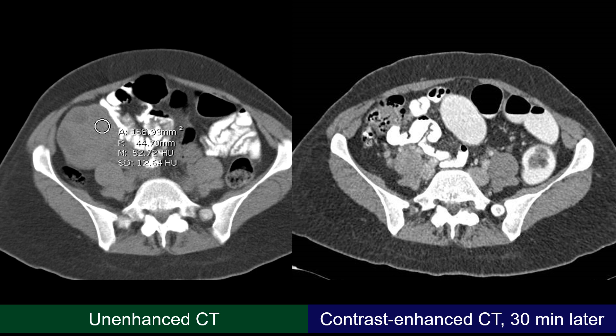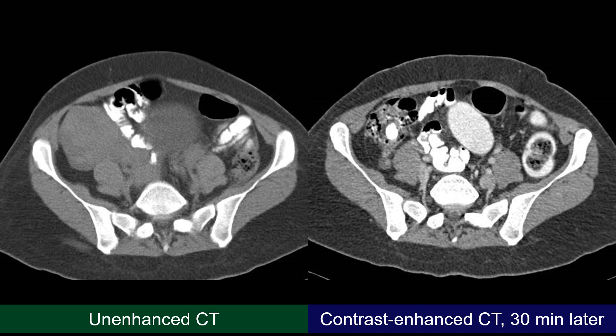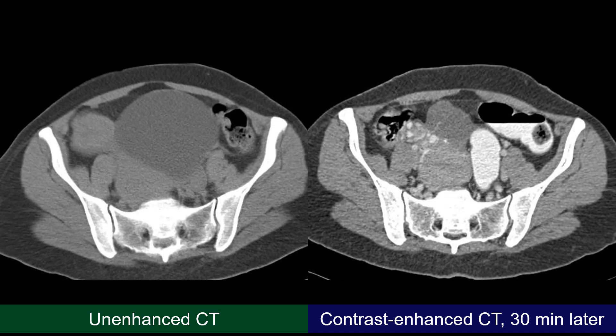But let us first determine the organ of origin of this lesion, because from the start until now we do not see the lesion at the same location on the contrast-enhanced CT. This is the uterus and this is the right horn of the uterus. So this lesion is probably the ovary or the right adnexa.